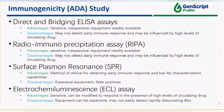There are several assay formats for measuring immunogenicity, each having distinct pros and cons. Bridging ELISAs and radio immune precipitation assays are sensitive, inexpensive, and typically require basic laboratory equipment. However, they may not be able to detect early immune response and can be influenced by high levels of circulating drugs. Conversely, SPR is the preferred method for detecting early immune responses and has antibody characterization capabilities. Its utility, however, is hampered due to the expensive equipment required and high false positive rate compared to other formats.